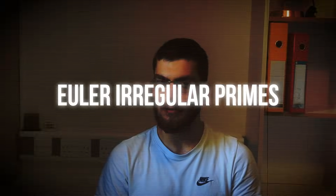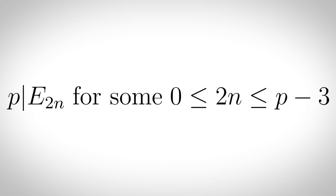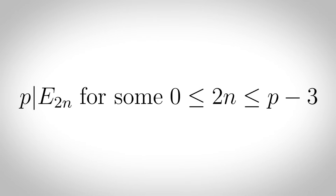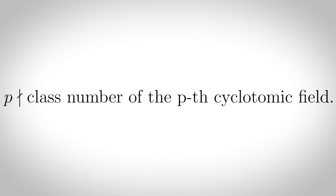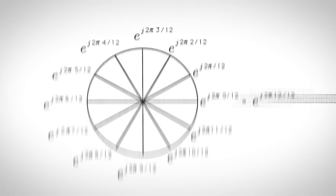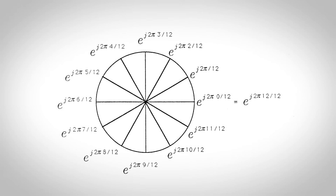Euler irregular primes: a prime p that divides Euler number e sub 2n for some 0 ≤ 2n ≤ p minus 3. Euler numbers are the coefficients when you expand the secant or sech function into a series. Regular primes: primes p that do not divide the class number of the p-th cyclotomic field. A cyclotomic field is a fancy number system invented by mathematicians that doesn't actually exist in the conventional sense.